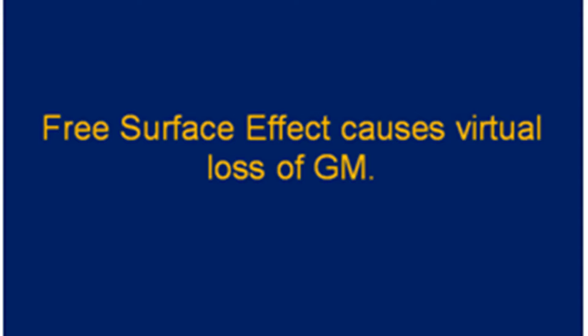We have not yet applied the free surface correction. Every tank that is not completely full or empty will cause a free surface effect. We are able to get the free surface moment for each such tank. The total of all the free surface moments divided by the displacement is the free surface correction, which is applied to the solid GM to get the fluid GM. The fluid GM is what we use for calculations such as finding the list.